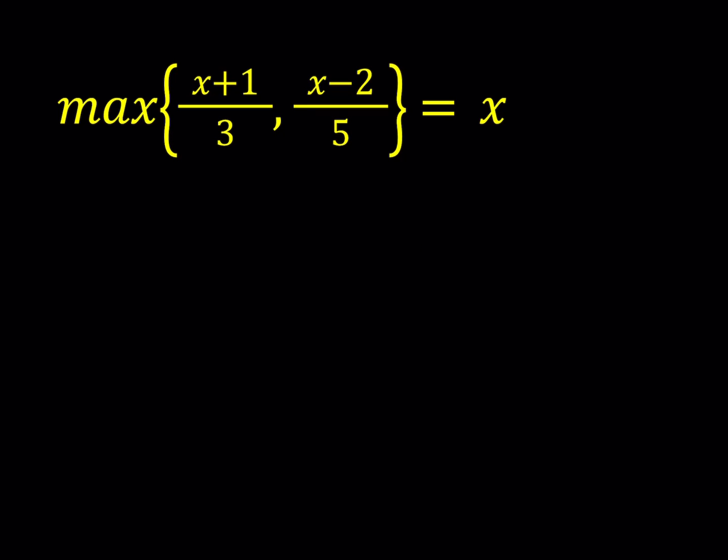So what I'm going to say first is if x plus 1 over 3 is greater than x minus 2 over 5. You could include the equality there in one of these, but it doesn't really matter. I can also look at it separately. Now, if the first quantity is greater than the second one, obviously our max function is going to return the greater one, which is x plus 1 over 3 in this case.